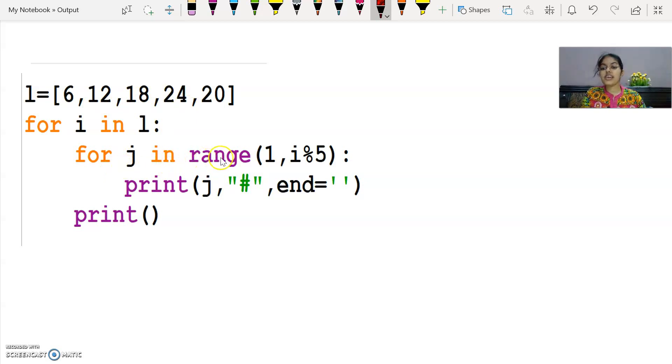And for j in range, where will j's loop run? It will start from 1, that's fixed. And the ending value is not fixed. That is depending upon the value of i. So every time when you take i's value, divide it by 5, whatever remainder comes, the loop will execute till one less than that. Because the range function's last value limit is not included, the upper limit.